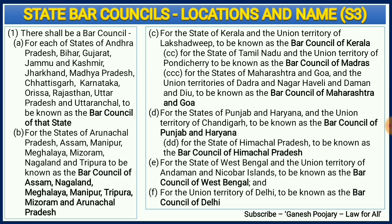In the first clause we have different bar councils for different states covering Andhra Pradesh, Bihar, Gujarat, Jammu and Kashmir, Jharkhand, Madhya Pradesh, Chhattisgarh, Karnataka, Orissa, Rajasthan, Uttar Pradesh and Uttaranchal. Now Andhra Pradesh has been divided into two states — Andhra Pradesh and Telangana — so the number of bar councils can increase accordingly. This information is very important for those writing judicial exams.